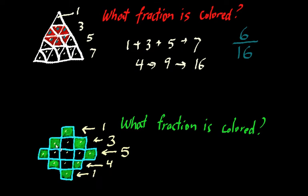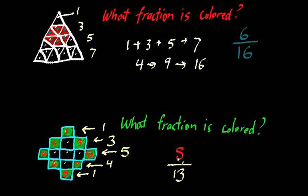Counting all squares: 1, 2, 3, 4, 5, 6, 7, 8, 9, 10, 11, 12, 13 — there are 13 total squares. Counting the colored ones: 1, 2, 3, 4, 5, 6, 7, 8 — so 8 of these 13 squares are colored in. The fraction that's actually colored is 8 over 13, or 8 thirteenths. So 8 thirteenths of this shape is colored in.